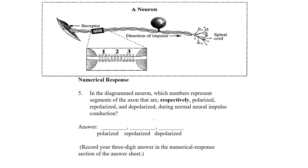The second part of this question is a numerical response question. These numerical response questions appear on your unit exams, your midterm, and of course your final. The midterm and final do not have written response, so they will have more numerical responses to replace that. This particular question uses the same diagram, so we don't need to go through that process again. They're asking which numbers represent segments of the axon that are respectively polarized, repolarized, and depolarized.